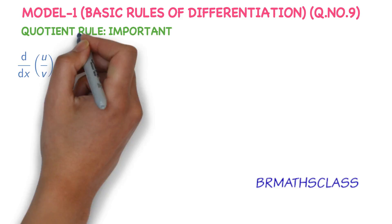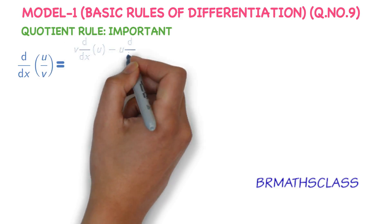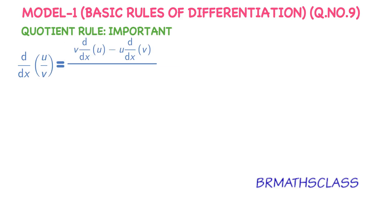What is quotient rule? Derivative of u by v equal to v into derivative of u minus u into derivative of v divided by v square. This formula is known as quotient rule.